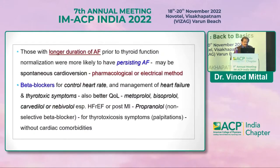Patients with long-standing chronic AF are likely to have persistent AF. While spontaneous cardioversion occurs sometimes, pharmacological or electrical cardioversion is usually needed. Beta-blockers are among the best medications for rate control, and also beneficial in heart failure, improving quality of life.